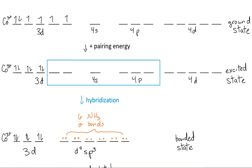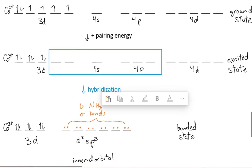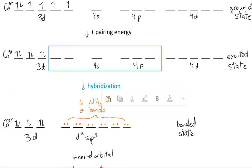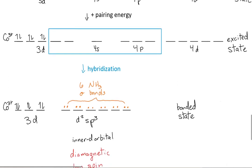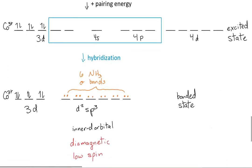As you can see in the orange, those are where my six NH3 sigma bonds are. Since there are no unpaired electrons, this ion is diamagnetic. We also use d2 sp3, which is an inner d orbital. Inner d orbitals tell us that this ion has a low spin.